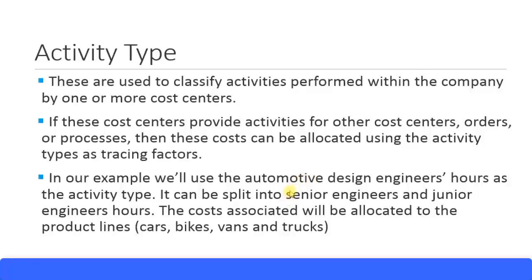The design engineers who are part of this cost center - their time or their salaries - we measure based on the number of hours they have worked. We then need to allocate their number of hours, for which we can calculate a price, to the respective four product lines. That will be a separate cost associated with those four product lines, because the Automotive Design department has engineers who work commonly for all four and we need to allocate their time.